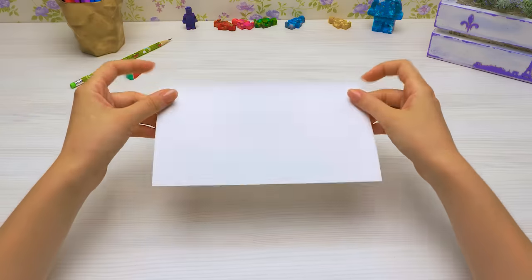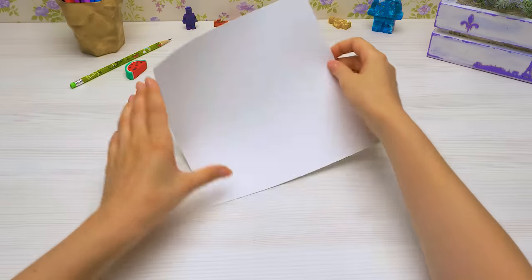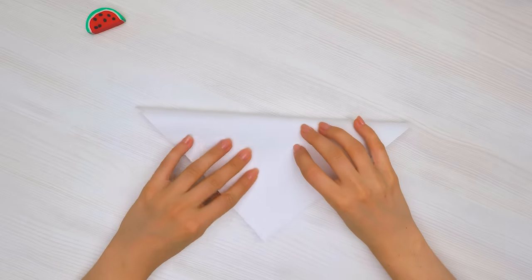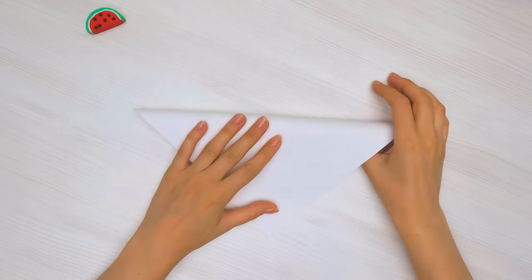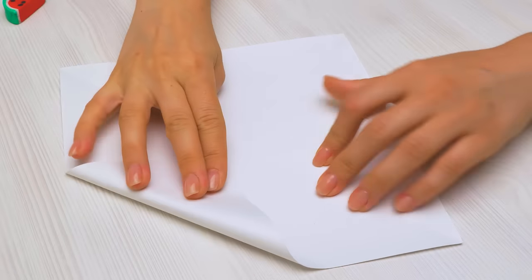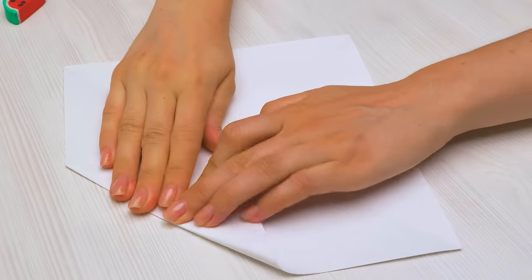For the next drawing, we're going to need this square piece of paper. Let's fold it in half on two sides. Now let's fold four corners into the middle, like this.